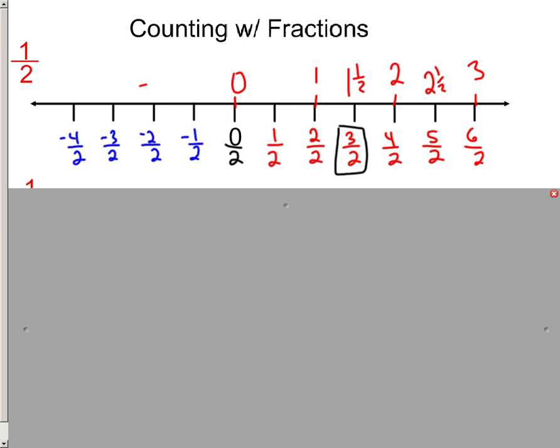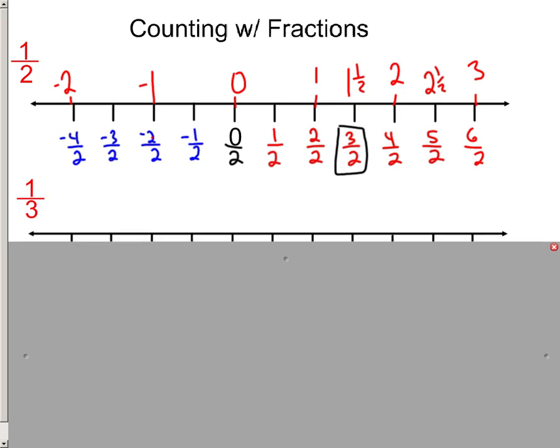And the same thing is happening over here. Hey, what's negative two divided by two? Negative one. That's negative four divided by two. Negative two. So that's how we do it.